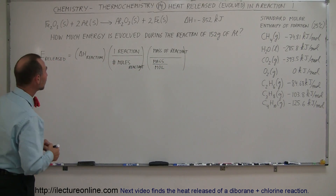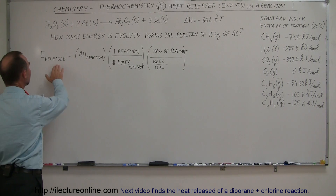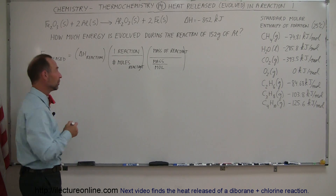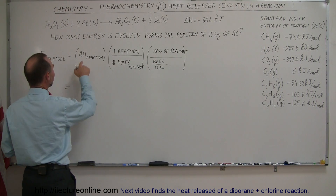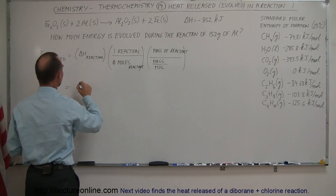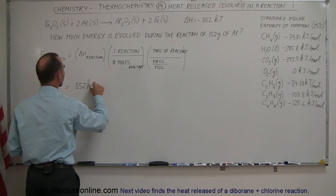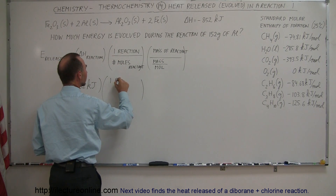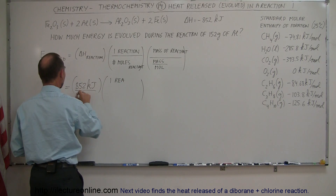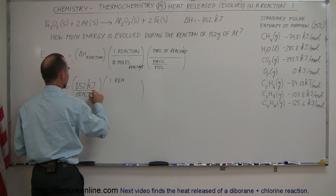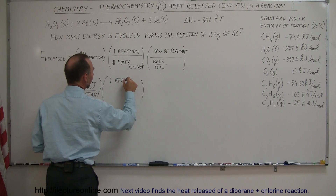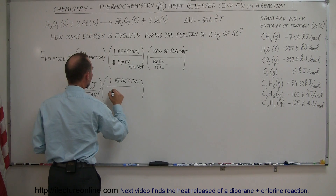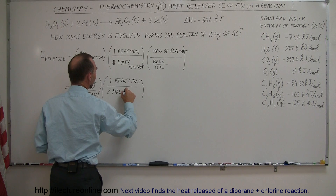Now that we have the equation, let's put in all the numbers. We need the energy released in the reaction, which is 852 kilojoules. We multiply that times one reaction — that would be per reaction. This particular reaction involves two moles of aluminum, so we use two moles of aluminum.